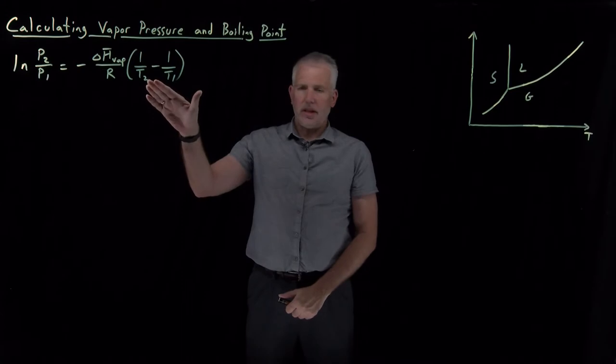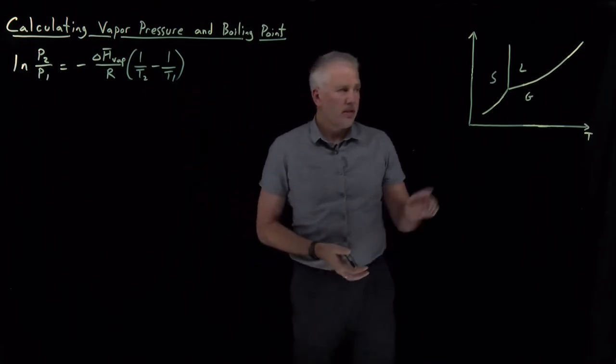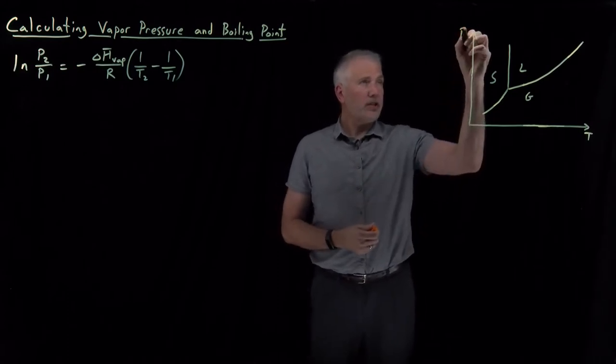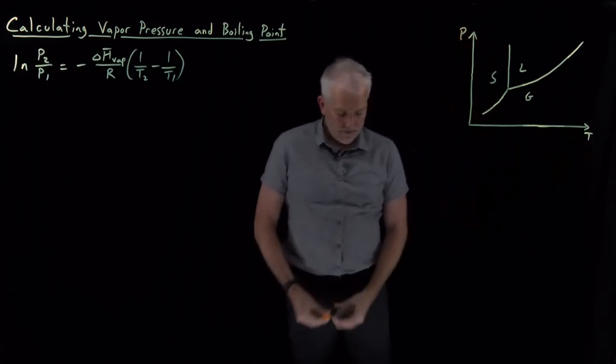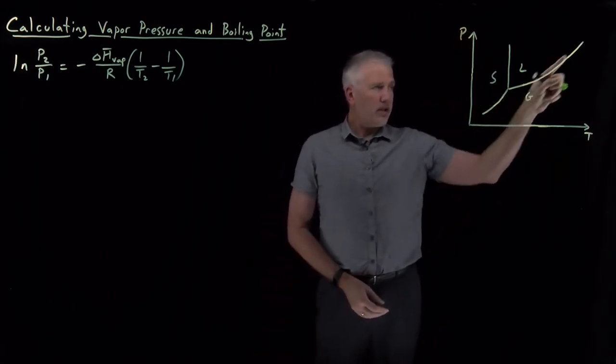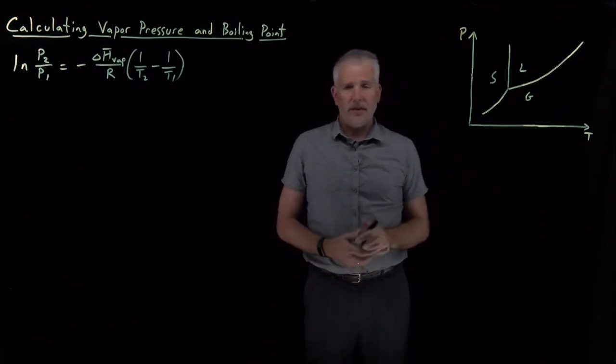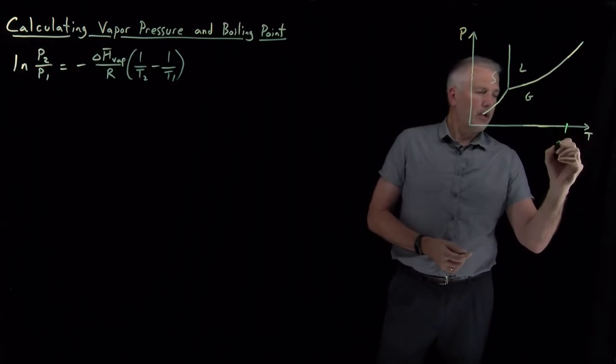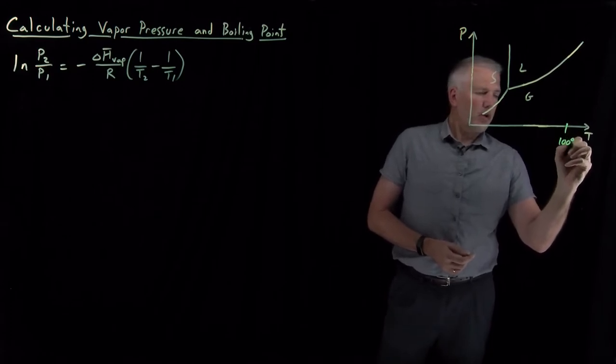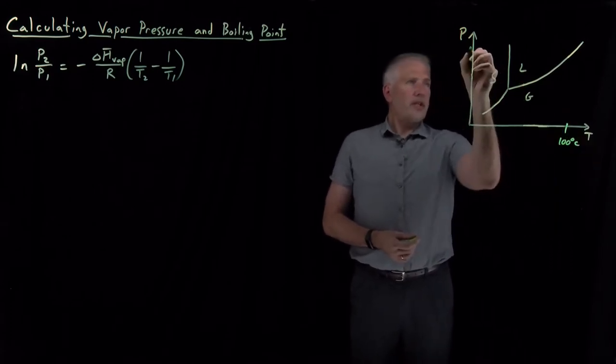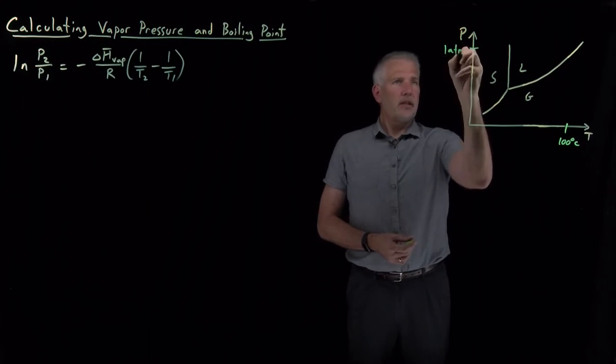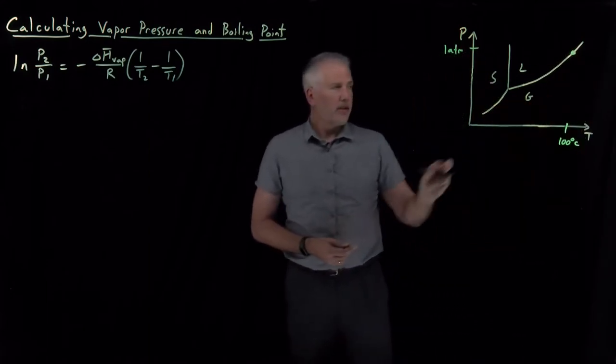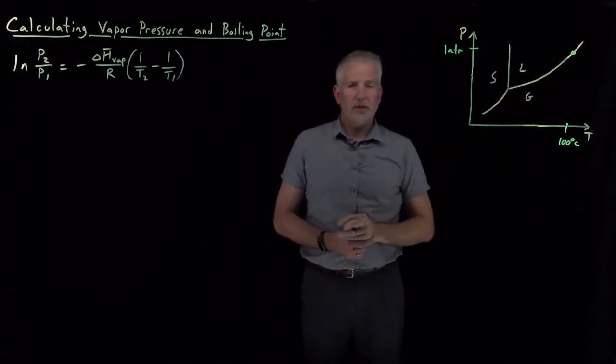So the Clausius-Clapeyron equation tells us the details of the pressure-temperature behavior, how the pressure changes with temperature along these coexistence lines that involve the gas phase on a pressure-temperature phase diagram. For example, sticking with our example of water, we know water boils at 100 degrees C and 1 atmosphere, so that's this point on the phase coexistence line, the liquid gas coexistence line.